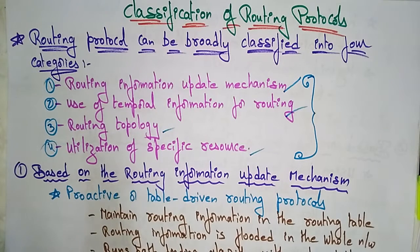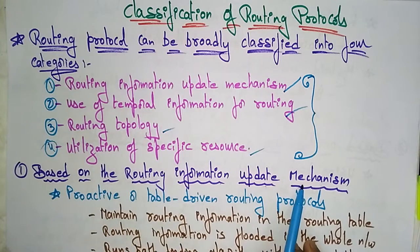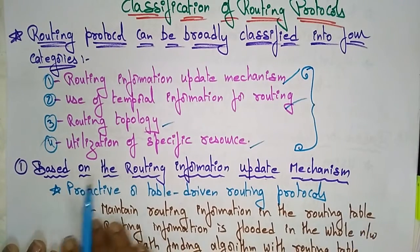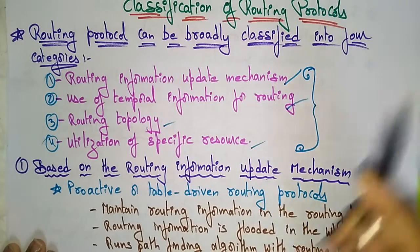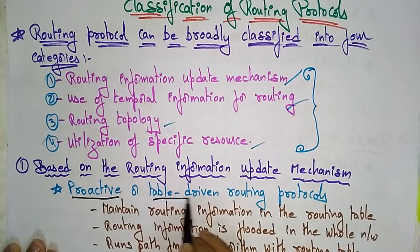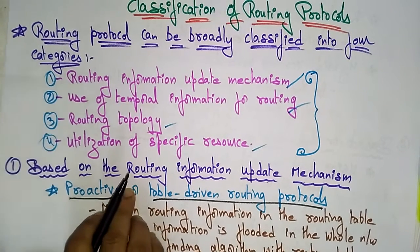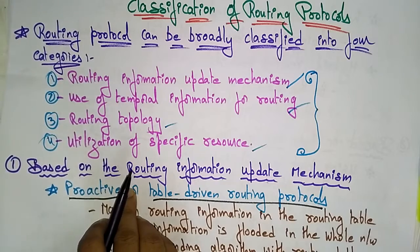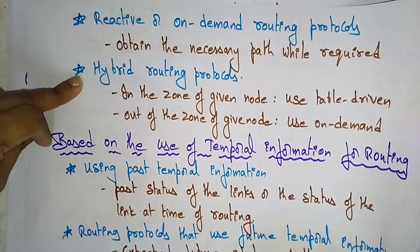Before going into each routing protocol, let's look at the first one: based on routing information update mechanisms. This first classification is called proactive or table-driven routing protocols. The routing information update mechanism is divided into three sub-types: one is proactive, another is reactive, and the next is hybrid.